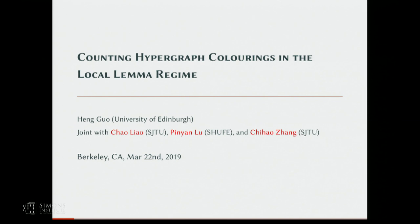I will instead talk about counting hypergraphic colorings, and I have two motivations. First, the algorithm is one that hasn't been covered in this workshop yet — it's basically a Moser's choice method. It's deterministic counting and we don't understand it that well; we don't know how to relate it to existing methods like correlation decay or zeros. The second motivation is that the problem itself is very interesting and we can prove something non-trivial, though it's not very satisfying. I hope to stimulate some interest in studying the problem.